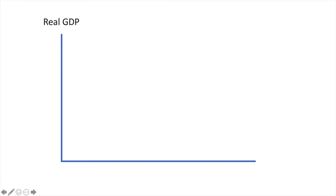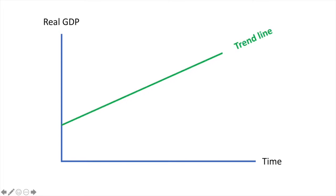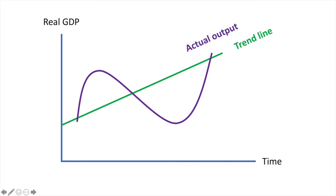If you have a pen and paper handy, copy this diagram along with the explanation. On the y-axis is real GDP and on the x-axis is time. We draw a straight line for the trend rate of growth, which is generally positive for all economies. The trend line represents the potential of an economy which expands over time. The fluctuations in real GDP are represented by the purple line, which is actual output, and this can be above, equal to, or below the trend line.